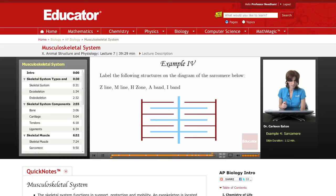Label the following structures in the diagram of the sarcomere below. So the first one we're asked is Z line, and there's a Z line here and there is also a Z line right here. So that's taken care of.